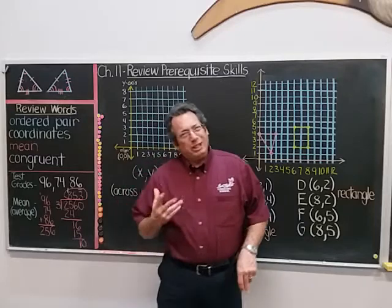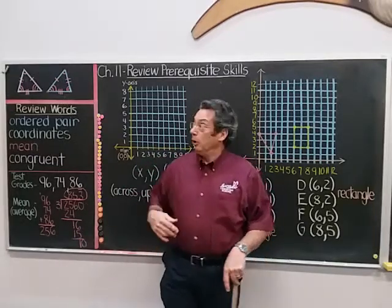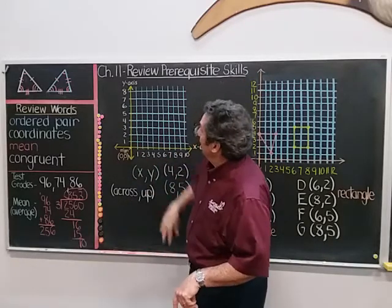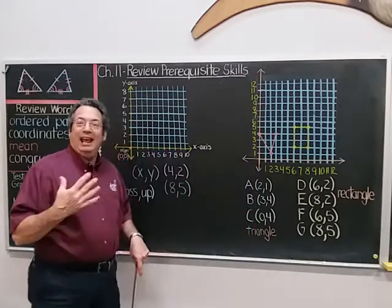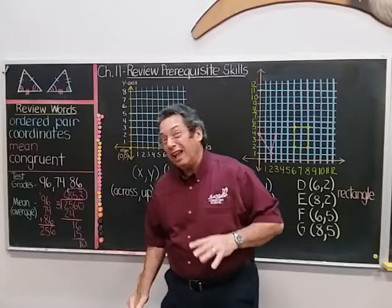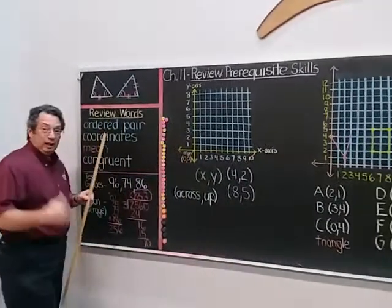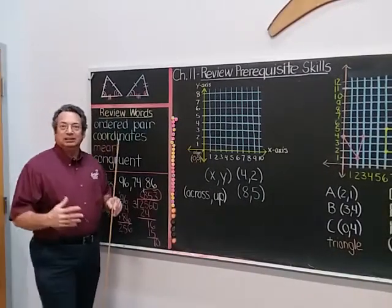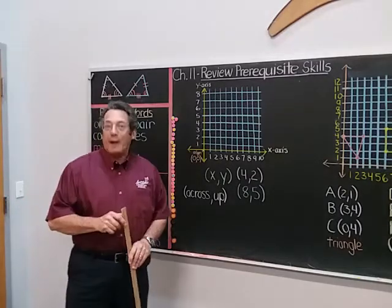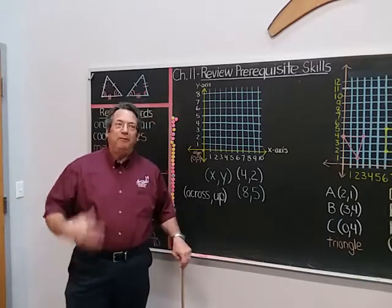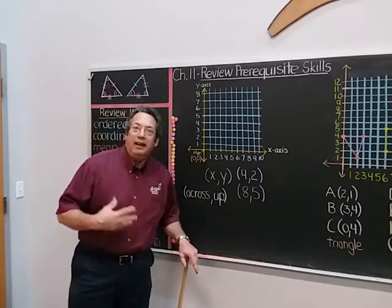Before we start chapter 11, we need some prerequisite skills review. So we're going to go today to the page in chapter 11 called Review Prerequisite Skills, and let's see what kinds of things would help us be successful in chapter 11. There are some review words in today's practice, and you'll need graph paper. In fact, graph paper would be a great idea for all of chapter 11.